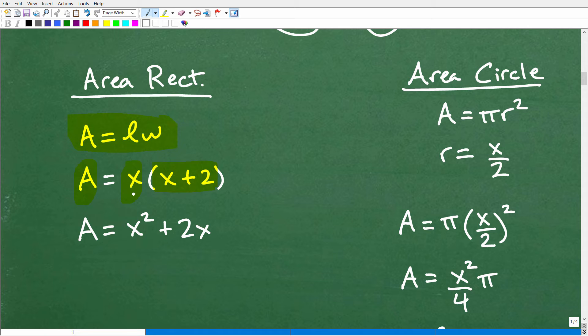So the area of this rectangle is going to be X times X plus 2, and then I can distribute this X. We have X times X, that's X squared. X times 2, 2X. So this is a nice expression for the area of the rectangle.